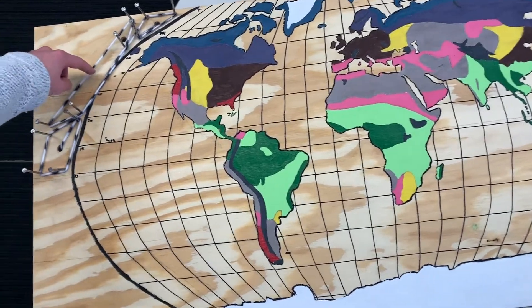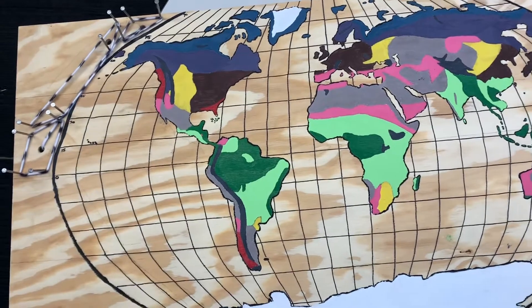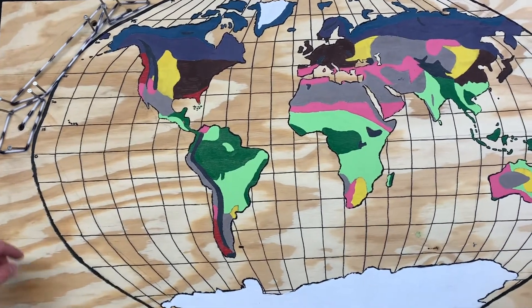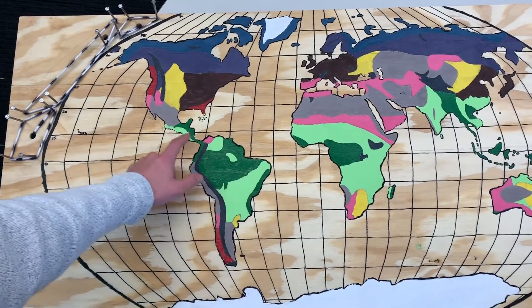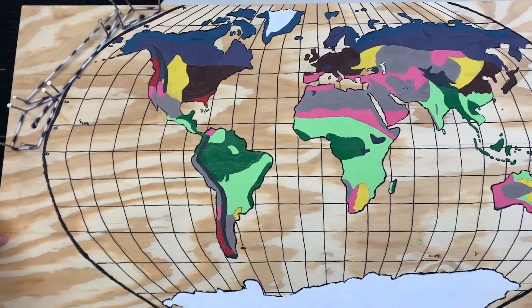Well they're Hadley cells, Ferrel cells, and a polar cell up there at the very northernmost point. These actually control how wind really moves on the planet. It's also really what controls how these biomes form.